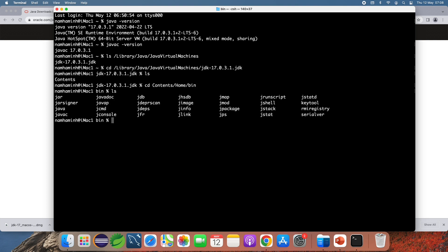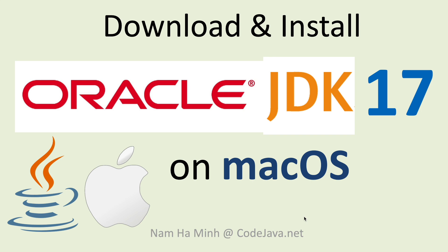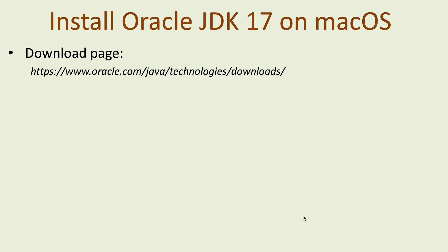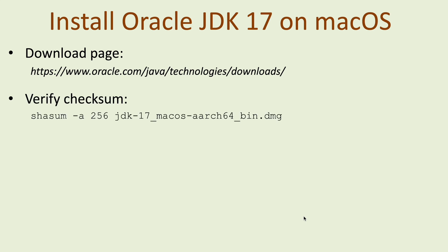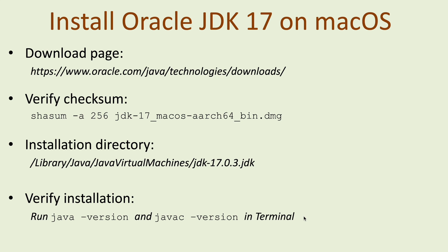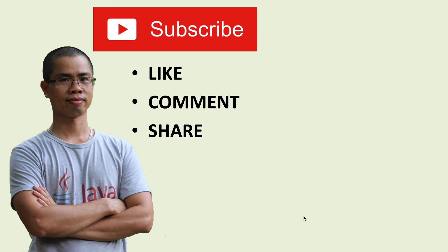You can see the contents of the JDK installation directory on macOS. To sum up: go to the official download page at oracle.com/java/technologies/downloads to download the DMG installer for macOS. You can use a command to verify the SHA-256 checksum of the downloaded file — this is an optional step. The default installation directory of Oracle JDK is in the standard system directory. Open a new terminal window and run 'java -version' and 'javac -version' to verify the installation. I hope you found this video helpful — please subscribe, like, comment, and share. Thanks for watching.